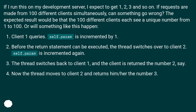If I run this on my development server, I expect to get 1, 2, 3 and so on. If requests are made from 100 different clients simultaneously, can something go wrong? The expected result would be that the 100 different clients each see a unique number from 1 to 100. Or will something like this happen?